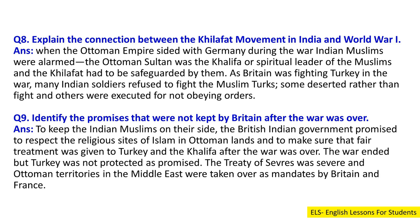Question 8: Explain the connection between the Khilafat movement in India and World War One. Answer: When the Ottoman Empire sided with Germany during the war, Indian Muslims were alarmed. The Ottoman Sultan was the Khalifa or spiritual leader of the Muslims, and the Khilafat had to be safeguarded by them. As Britain was fighting Turkey in the war, many Indian soldiers refused to fight the Muslim Turks. Some deserted rather than fight and others were executed for not obeying orders.